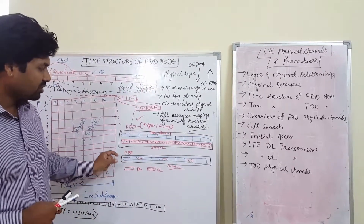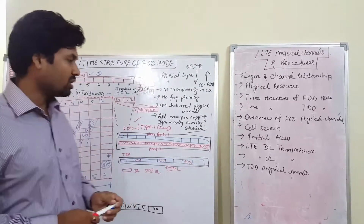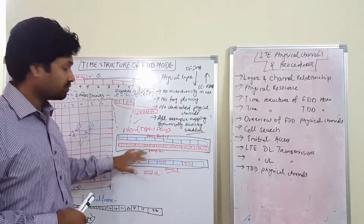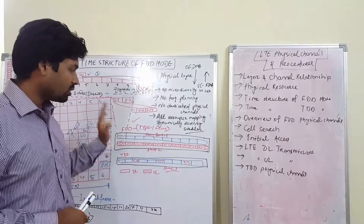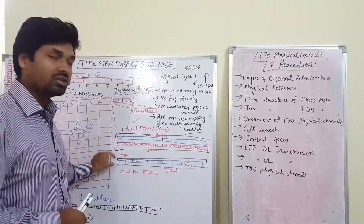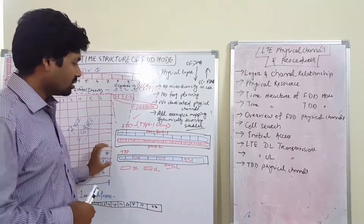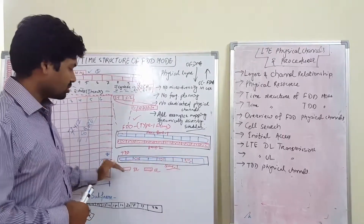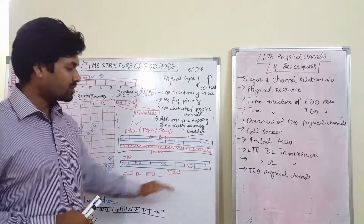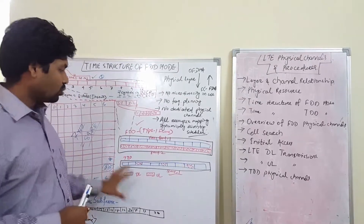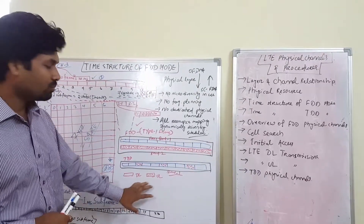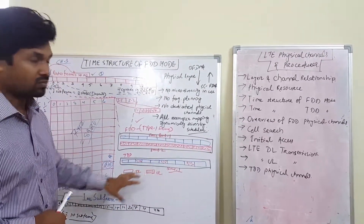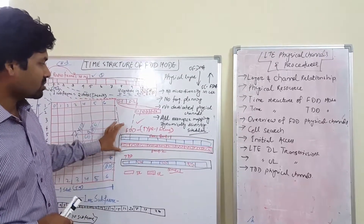In FDD mode we have 20 MHz for downlink and 20 MHz for uplink — 40 MHz total. In TDD mode we use just one band, say 20 MHz, for both uplink and downlink. We can use different formats to define how many uplink, downlink, and special sub frames are allocated.